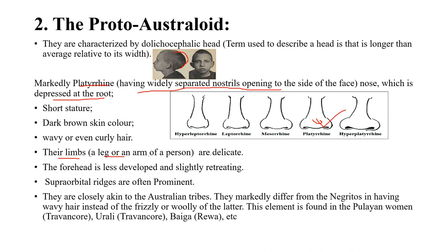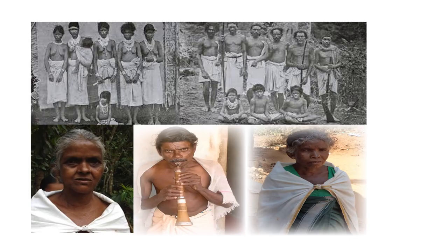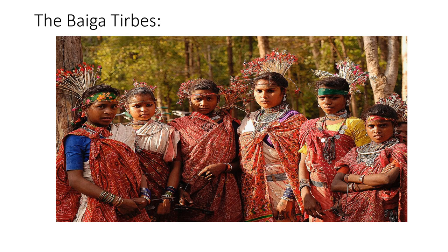Forehead is less developed and slightly retreating, and supraorbital ridges are often prominent. They are closely akin to Australian tribes, which is why they are called Proto-Australoid, and they markedly differ from Negrito. Examples include Pulayan women of Travancore, Urali of Travancore, and Baiga of Rewa — Rewa is in Madhya Pradesh.